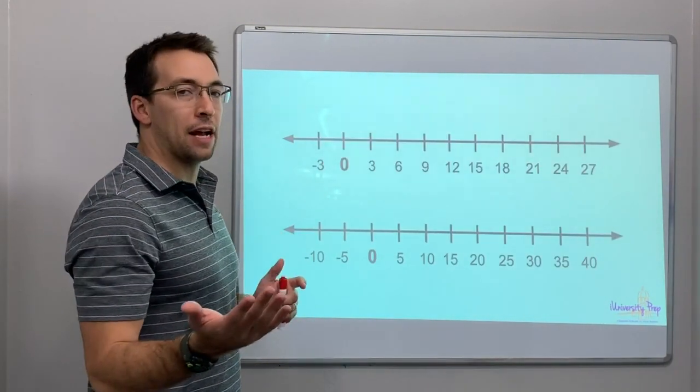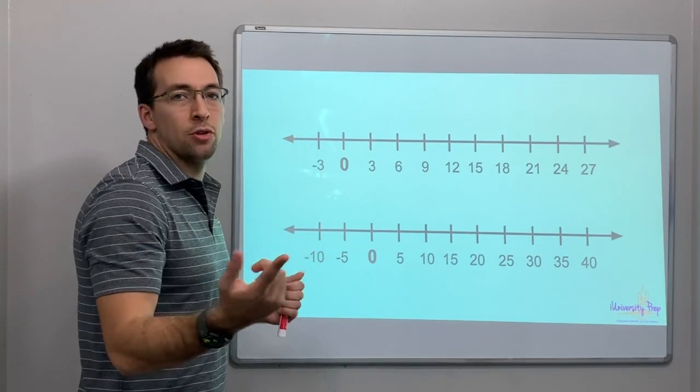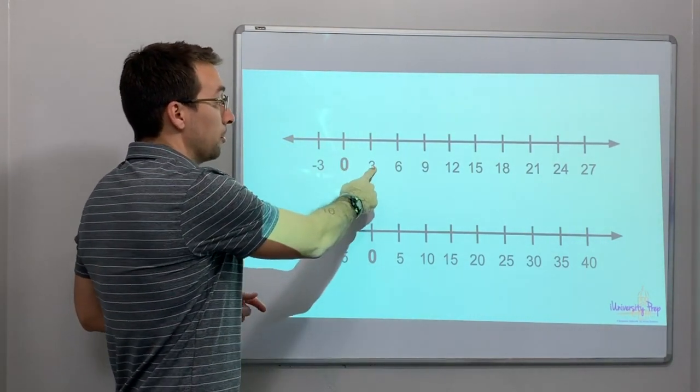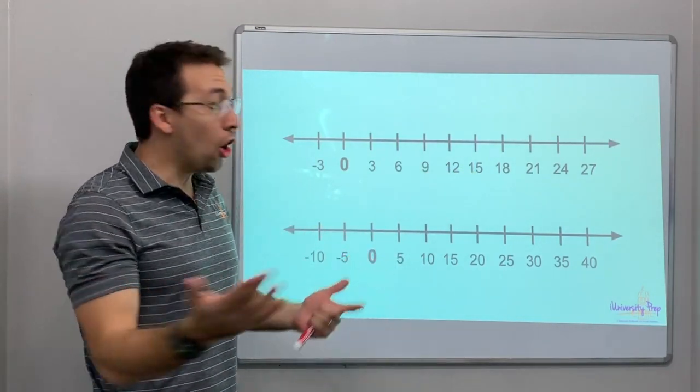But you don't just have to have number lines going by 1s. You can have number lines going by 3: negative 3, 0, 3, 6, 9, 12, 15.